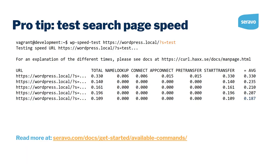If you are a Seravo customer, we also recommend using our wp-speedtest command. You can test your search results page load time by giving the URL of the results page as the parameter to wp-speedtest. You can read more about that in our documentation.